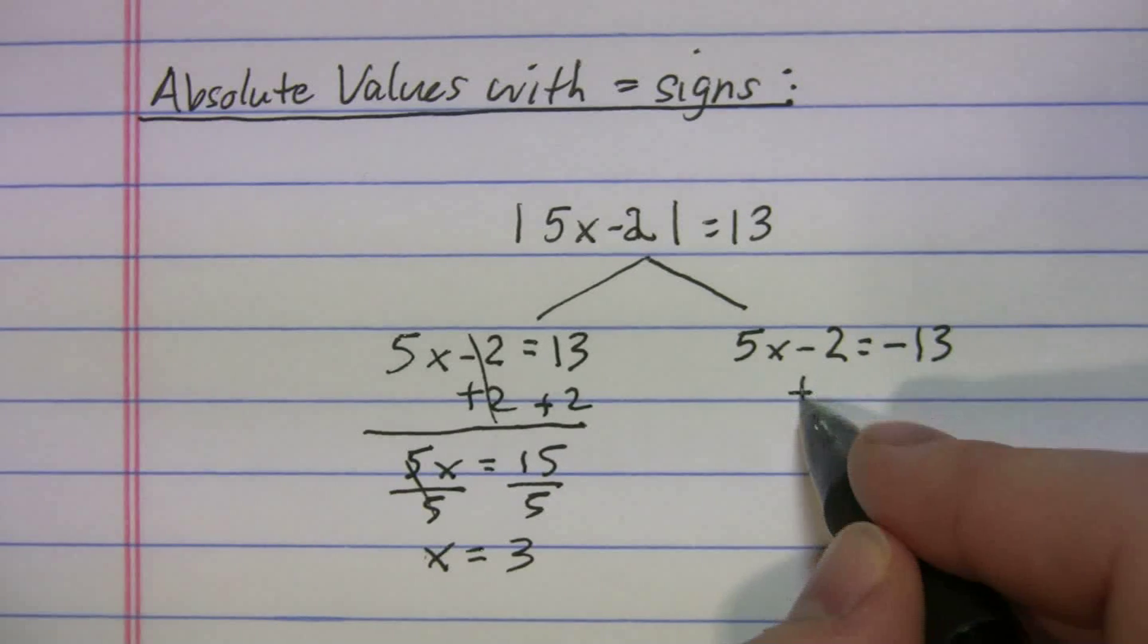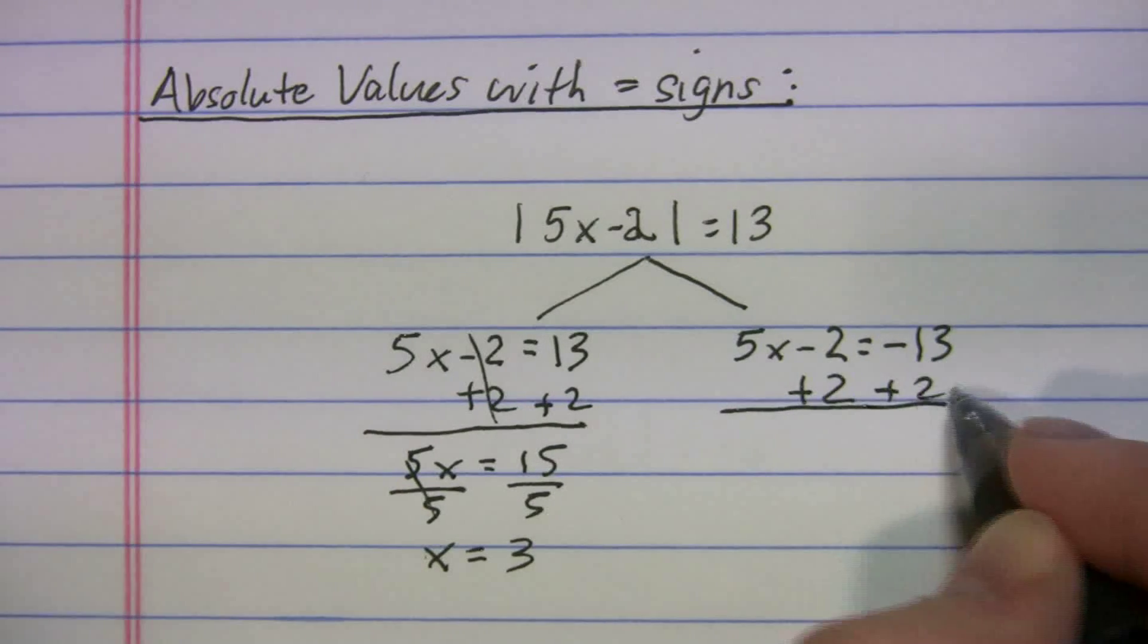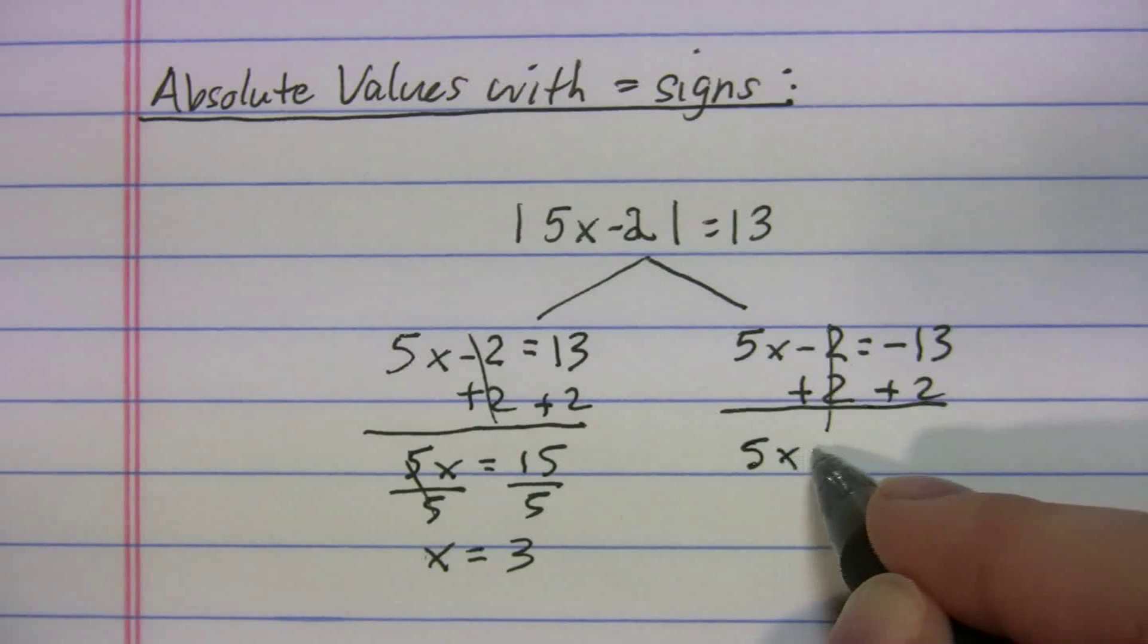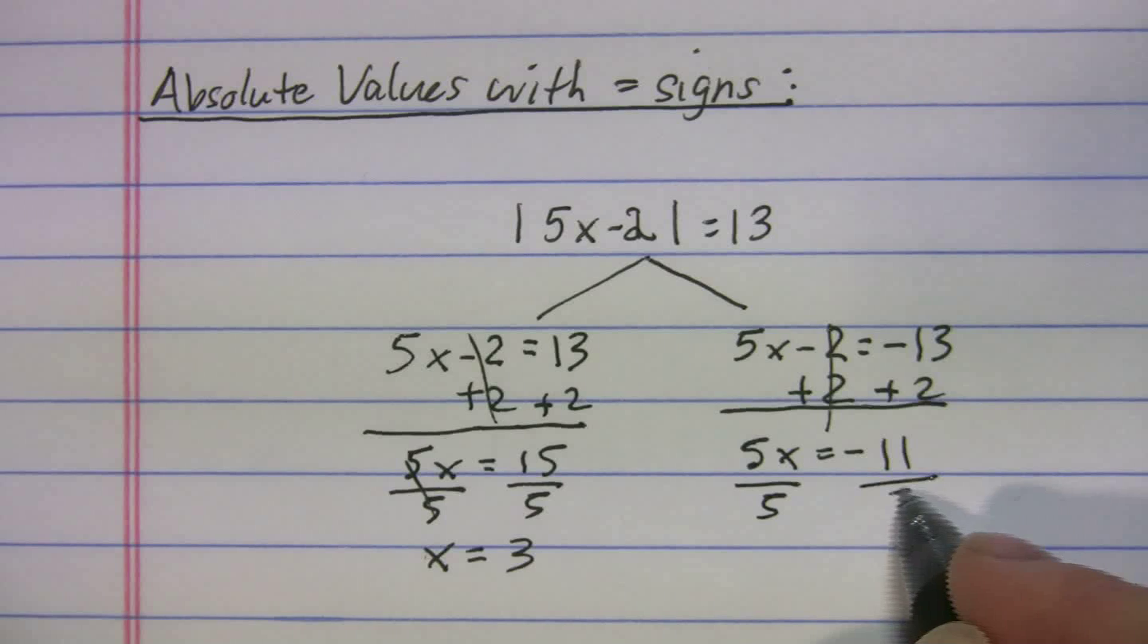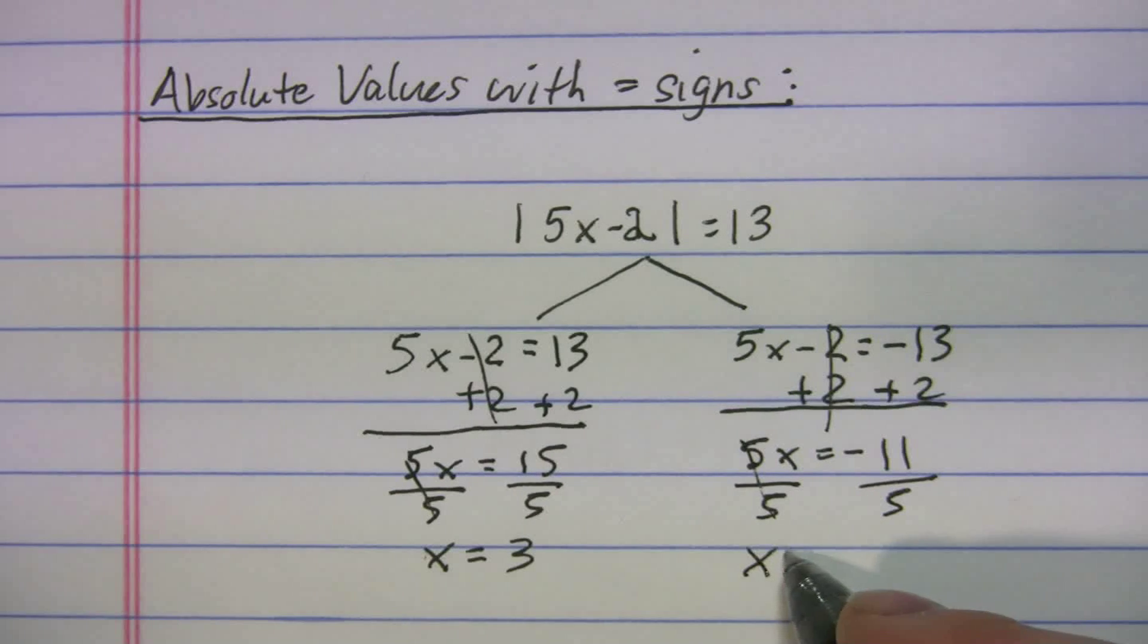Let's solve for the other one. We'll add the 2. We'll get 5x is equal to -11. We'll divide by 5. And we get x is equal to -11/5.